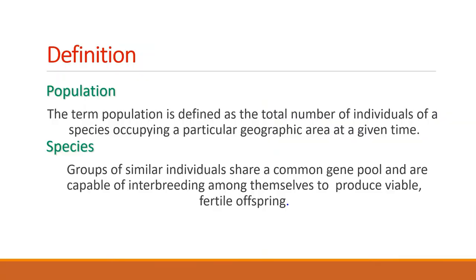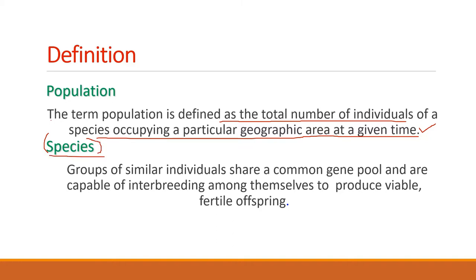Generally, a population is defined as a group of individuals of the same species that live together in the same place or area at the same time. In other words, the term population is defined as the total number of individuals of a species occupying a particular geographic area at a given time. A species is a group of similar individuals that share a common gene pool and are capable of interbreeding among themselves to produce viable fertile offspring.